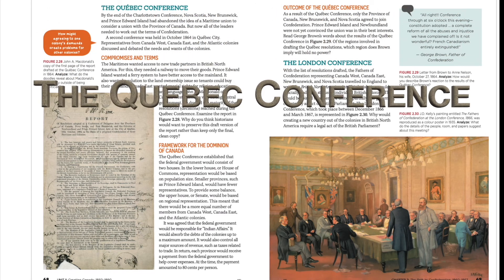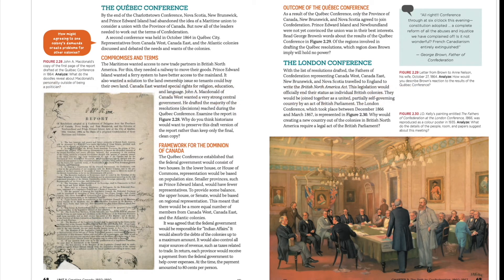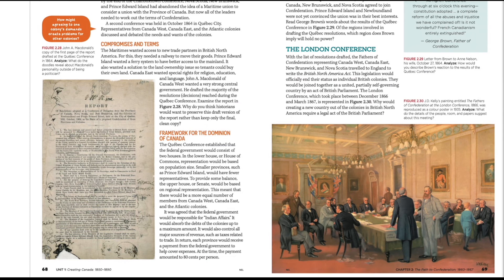Representatives from Quebec, Canada West, Canada East, and the Atlantic colonies discussed and debated the needs and wants of the colonies. The Maritimes wanted access to new trade partners in British North America and needed a railway to move their goods. PEI wanted a ferry system for better access to the mainland and a solution to land ownership issues so tenants could buy their own land. Canada East won special rights for religion, education, and language. John A. MacDonald of Canada West wanted a very strong central government and drafted the majority of the resolutions.